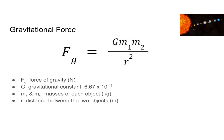Gravitational force Fg is given by GMm over R squared. Where Fg is the force of gravity, which we measure in newtons. Capital G, which we must differentiate from lowercase g, is the gravitational constant, which is 6.67 times 10 to the negative 11th. M1 and M2 are the masses of each object, measured in kilograms. And R is the distance between my two objects, measured in meters.